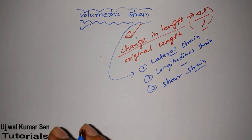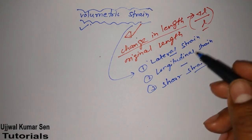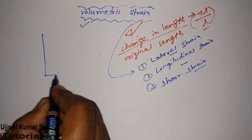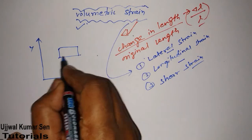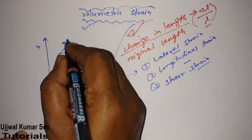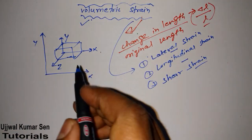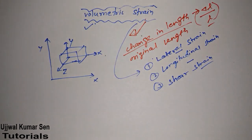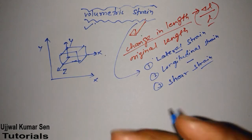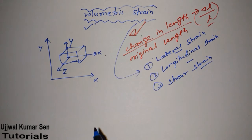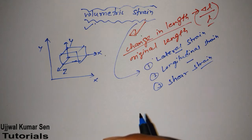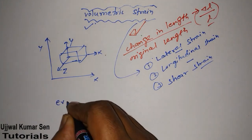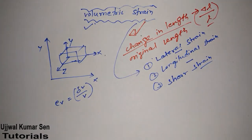Volumetric strain is different because all other strains act in one direction only — maybe X, Y, or Z — but volumetric strain happens in all directions. If we take a 3D object with X, Y, and Z dimensions, and its shape changes three-dimensionally, then we can find the volumetric strain. Volumetric strain, denoted as e_v, is defined as change in volume (ΔV) divided by original volume.